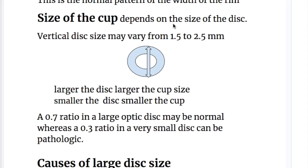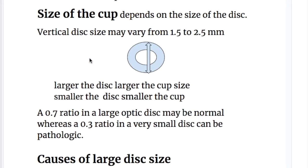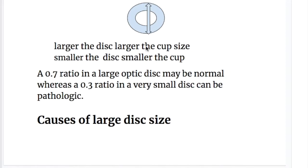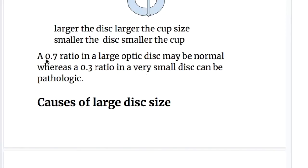The size of the cup depends on the size of the disc. The vertical size of the disc varies from 1.5 to 2.5 millimeters. Larger the disc, larger the cup size; smaller the disc, smaller the cup size. A 0.7 CD ratio in a large optic disc may be normal, whereas a 0.3 ratio in a very small disc can be pathologic.